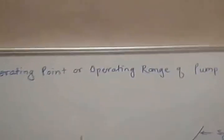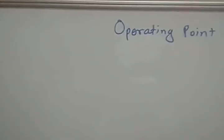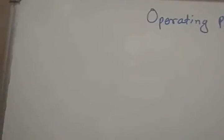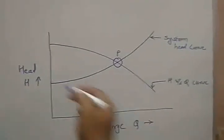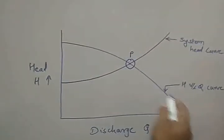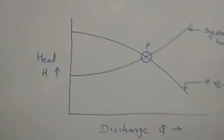Now, we will see the operating point or operating range of a centrifugal pump. The operating point of a centrifugal pump is the point of intersection of the system head curve with the head-discharge curve. I have drawn the plot — you can see the system head curve and the head-discharge curve, and the intersection point of these two curves is the operating point P.